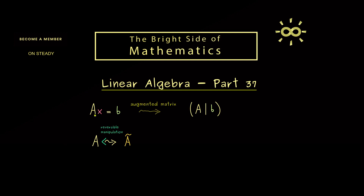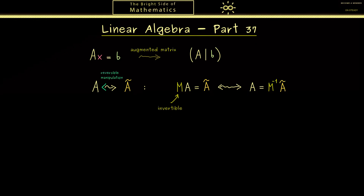On the matrix level, this would mean that we change matrix A to another matrix A tilde, and this operation should be reversible. Hence the whole operation should be described by an invertible matrix: M times A equals A tilde, where M should be a square invertible matrix. Then we can multiply A tilde with the inverse of M to get A back. It's important to note that this reverse operation is theoretically possible, meaning we don't lose any information in the process.